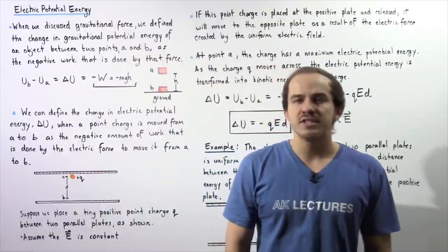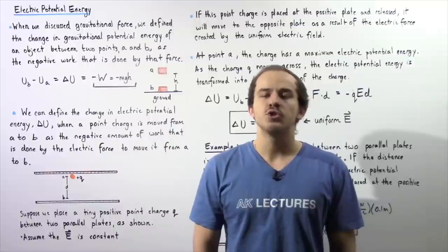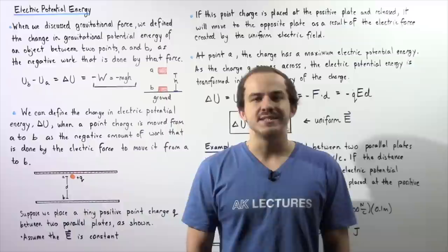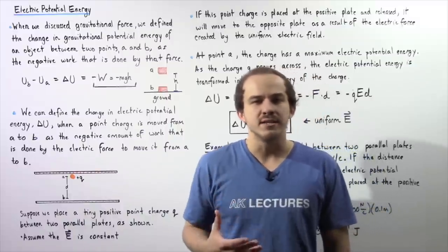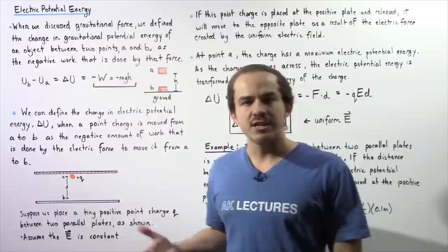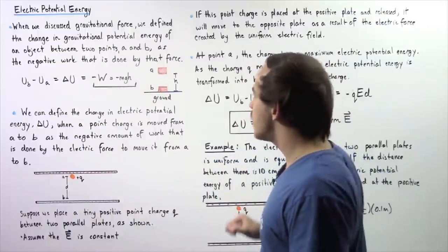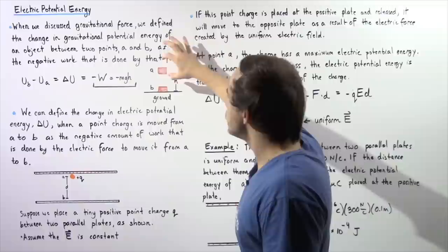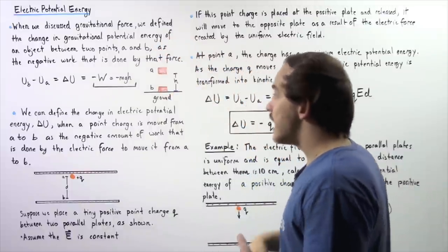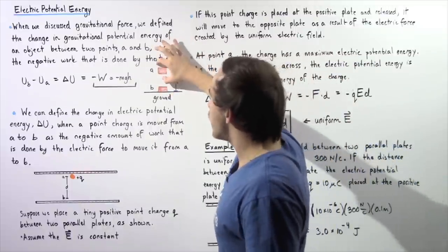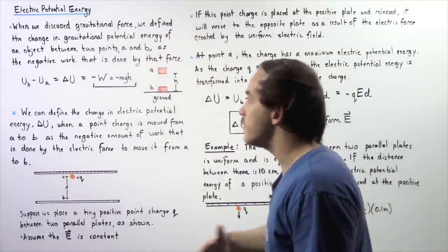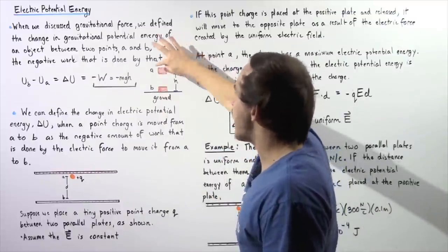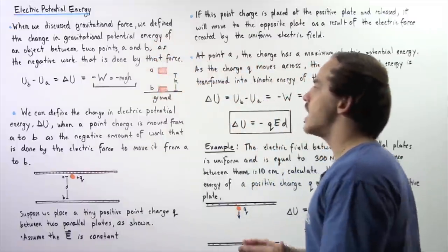When we discuss gravitational forces, we define the change in gravitational potential energy of an object with some mass between two points A and B as the negative quantity of work done by that gravitational force on the object when we move it from point A to point B. Let's suppose we have a box and we move it from point A to point B — we let it go and allow the force of gravity to do all that work, bringing the box a distance H from point A down to point B on the ground.